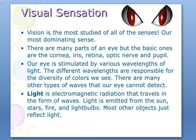There are many parts of an eye, but the basic ones are the cornea, optic nerve, retina, iris, and pupil. Our eye is stimulated by various wavelengths of light, and the different wavelengths are responsible for the diversity of colors we see. There are many other types of waves that the eye cannot detect.